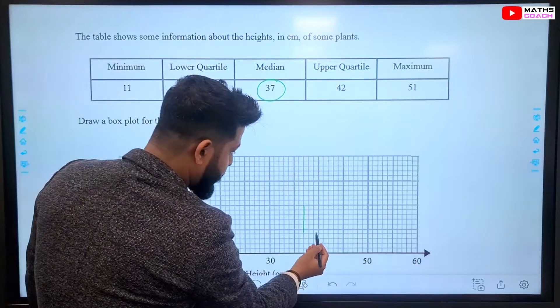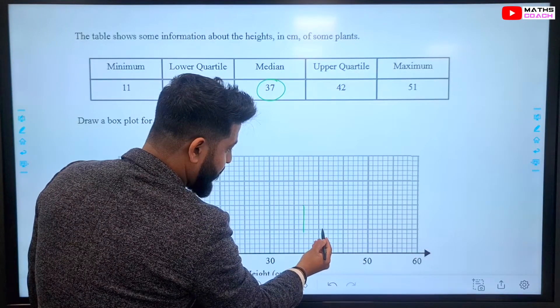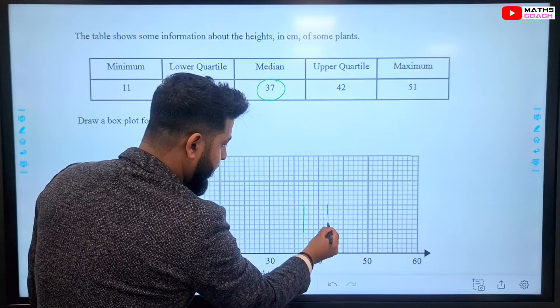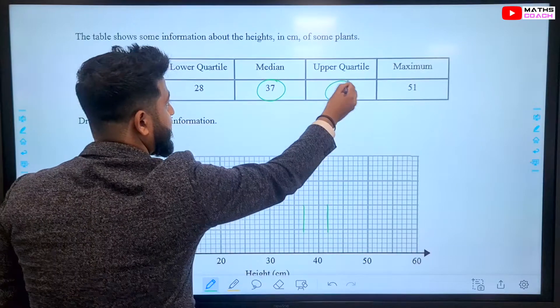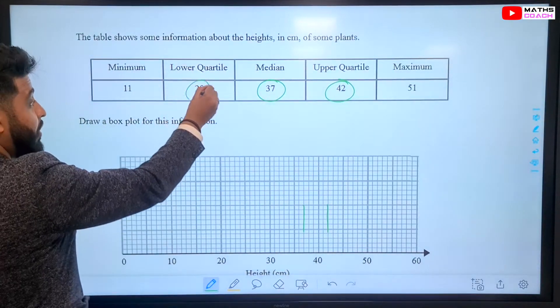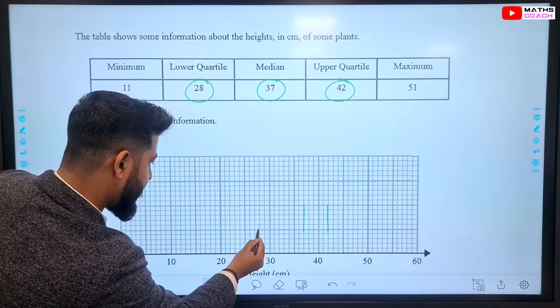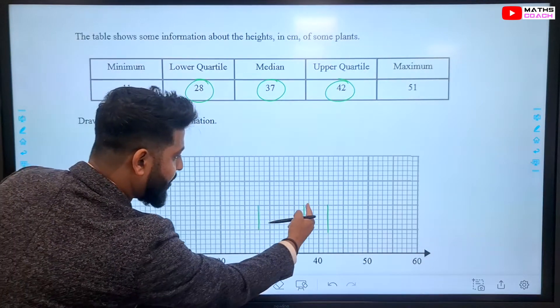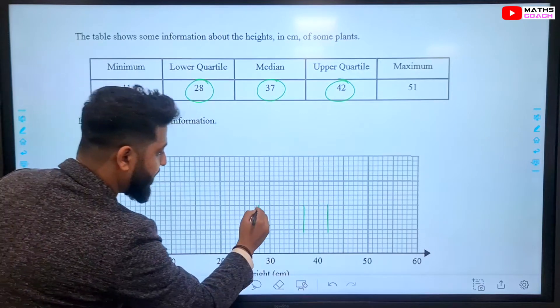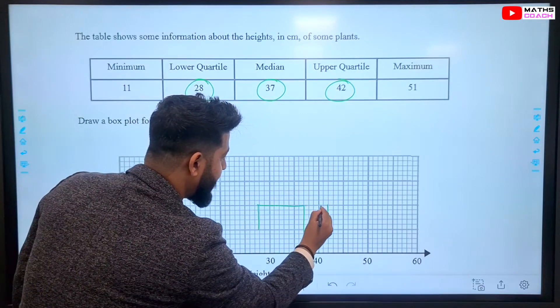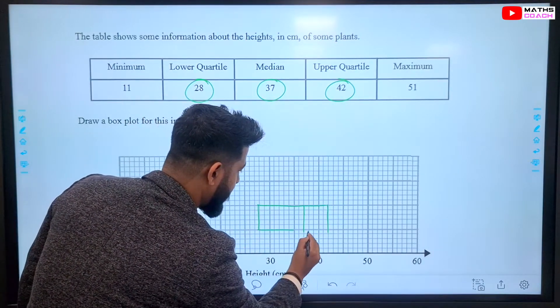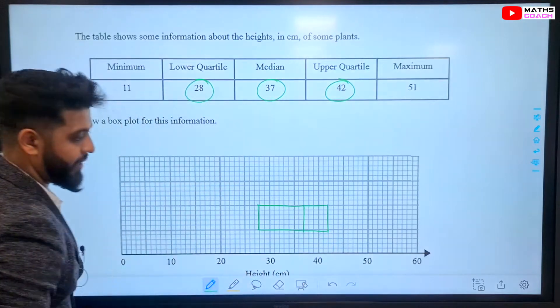Next, our upper quartile, which is on 42. So, that's 40, 41, 42, right there. That's upper quartile done. Our lower quartile is 28. So, 20, 25, 28 is right there. Notice how I'm drawing them the same length, because I will be drawing a rectangle and completing those lines like that.